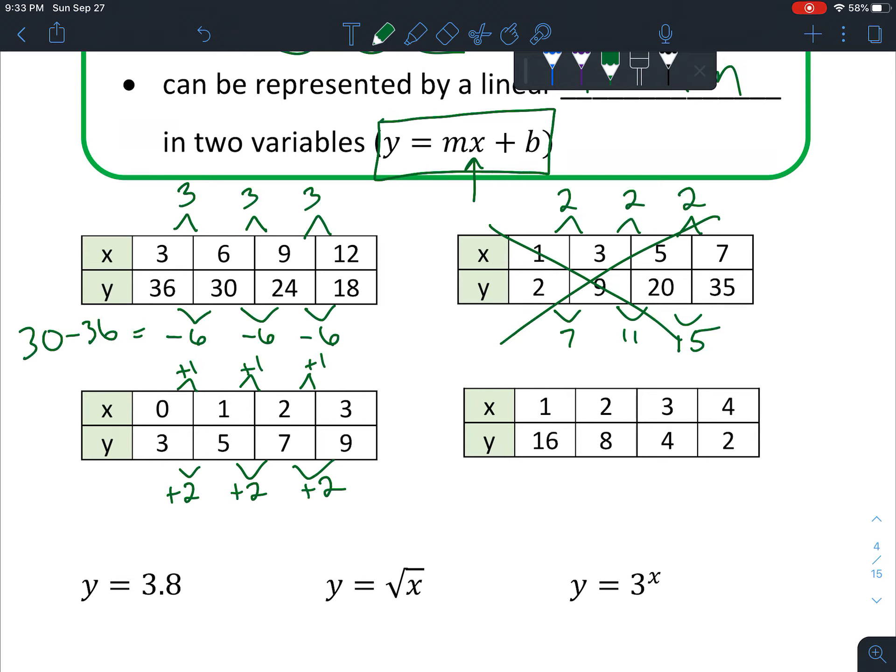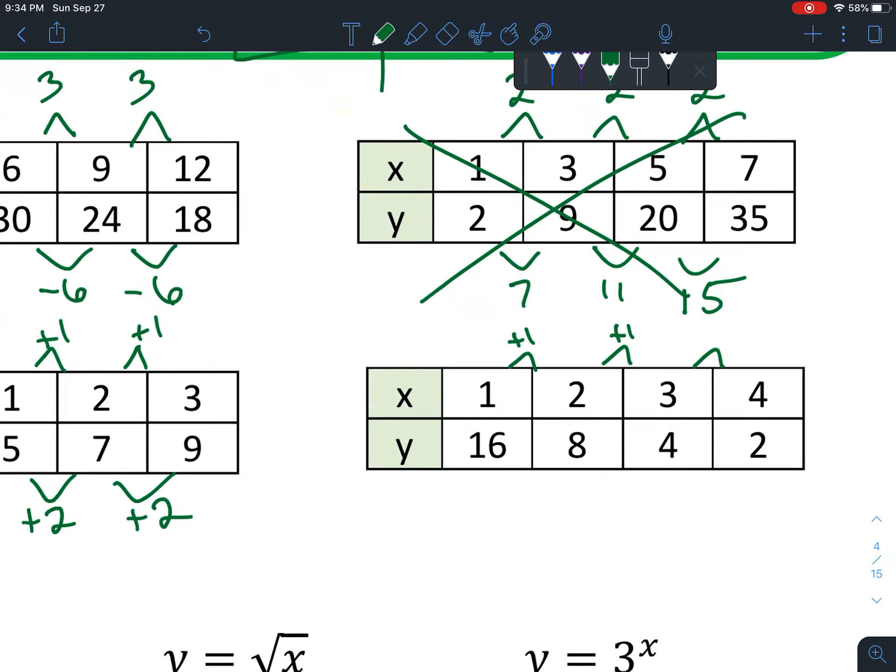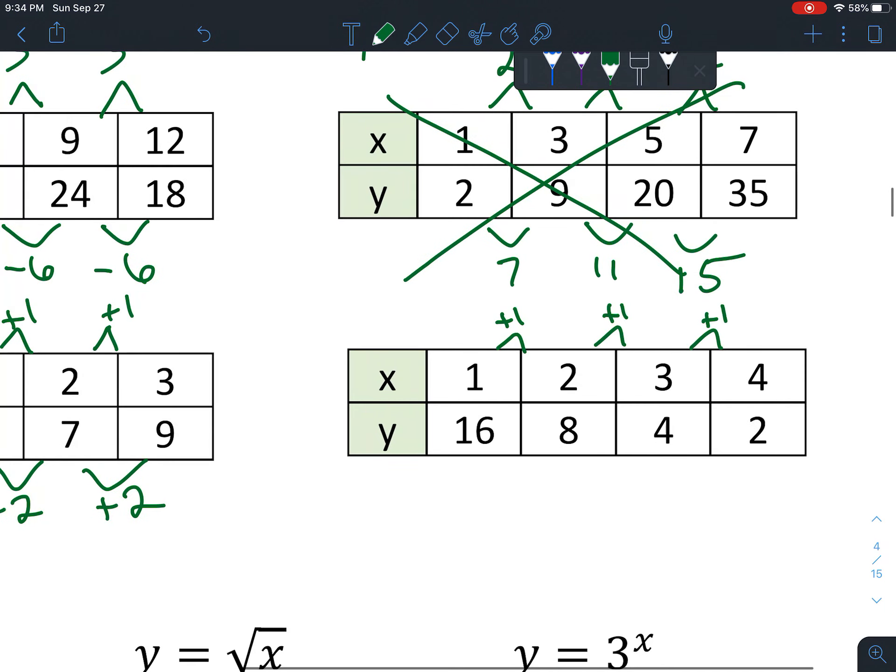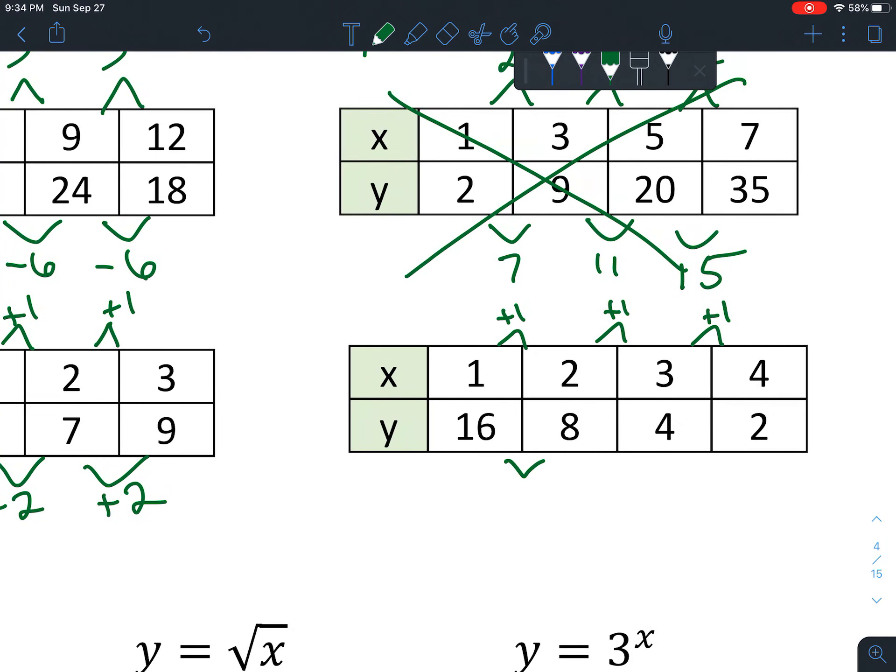Let's check our next one. We're adding 1: 2 plus 1 is 3, 3 plus 1 is 4, so the top's constant. Let's see, 8 minus 16 is negative 8, 4 minus 8 is negative 4, 2 minus 4 is negative 2. So this one's not a linear function.